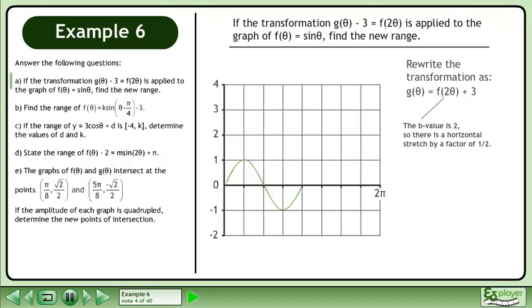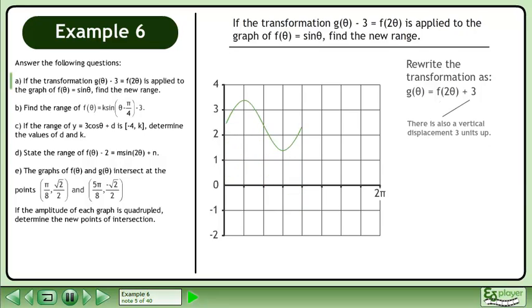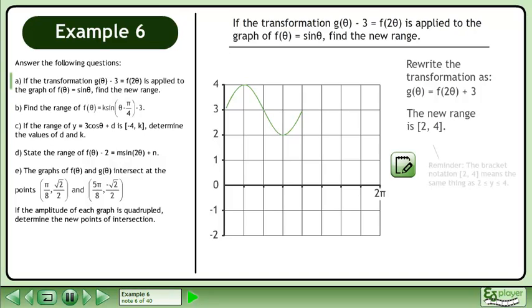The b value is 2, so there is a horizontal stretch by a factor of 1 half. There is also a vertical displacement 3 units up. The new range is between 2 and 4 inclusive.